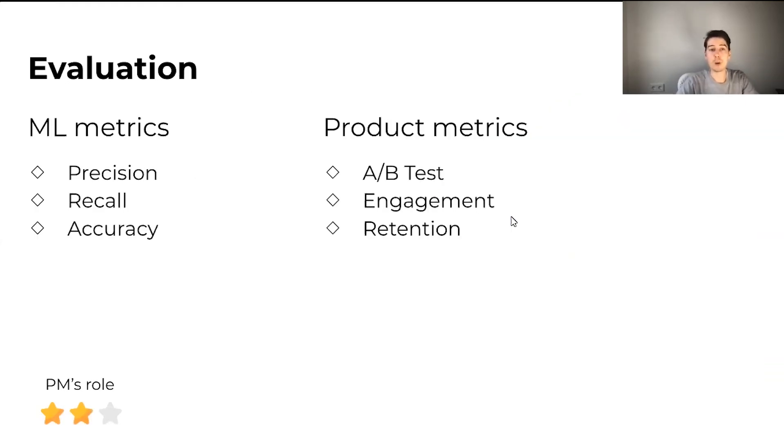Okay, now we have a model, and it's time to evaluate it. There are two types of metrics you can track: either ML-specific metrics or product metrics. Some of the popular examples of ML metrics are precision, recall, and accuracy. However, even if all of these metrics show really good results, it doesn't necessarily mean that it would translate to some improvements in your product. So, as a product manager, probably you would want to run an A-B test and calculate engagement, retention, and other types of metrics that might be relevant to your product.